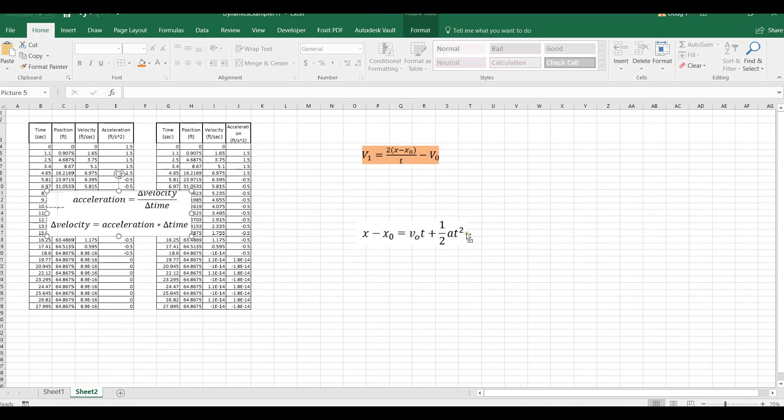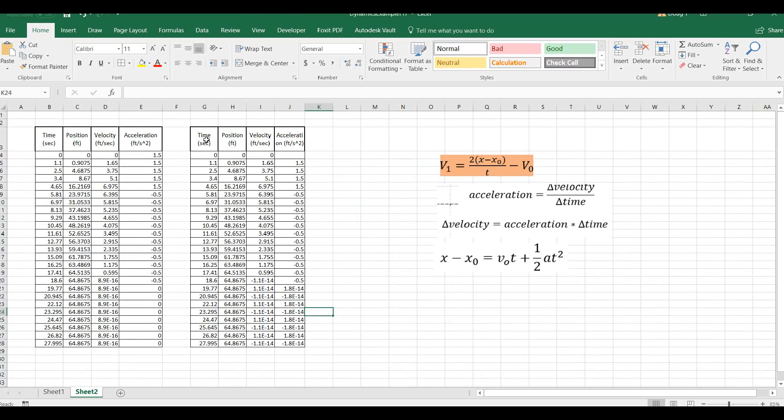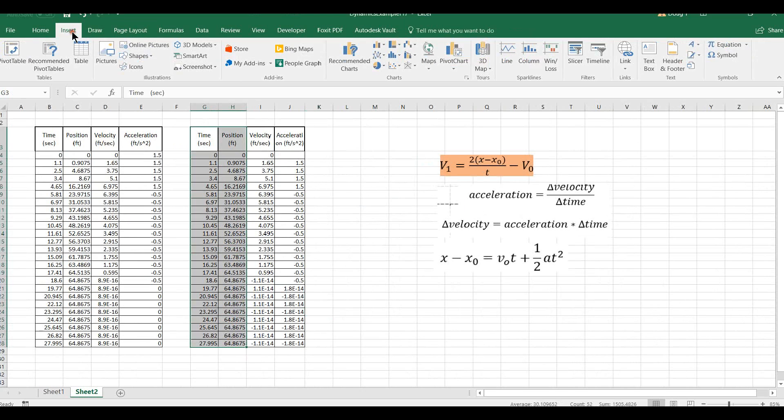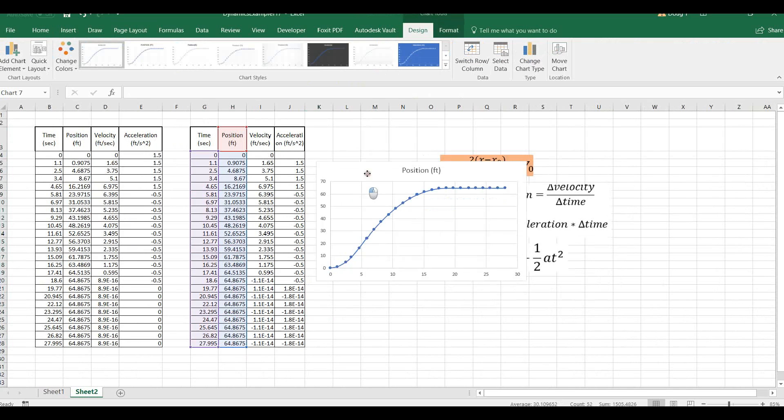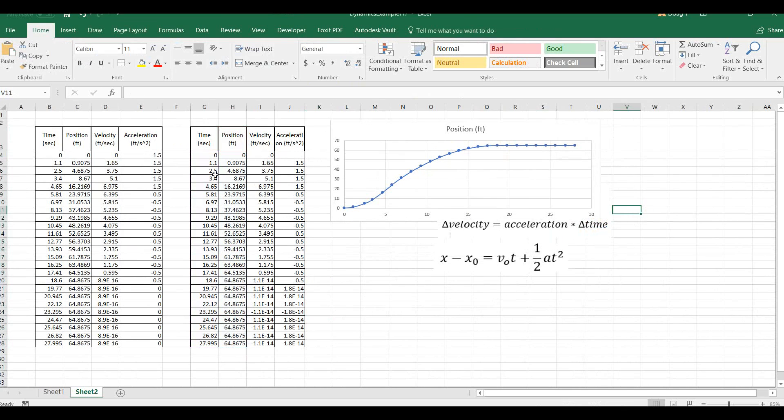Once you have your data in here, the next thing to do is to graph this out. I'm going to grab my position and time data first. Say insert a scatter plot, and here is my position versus time data.